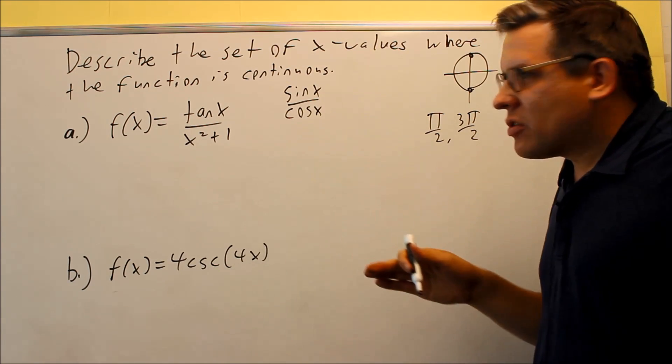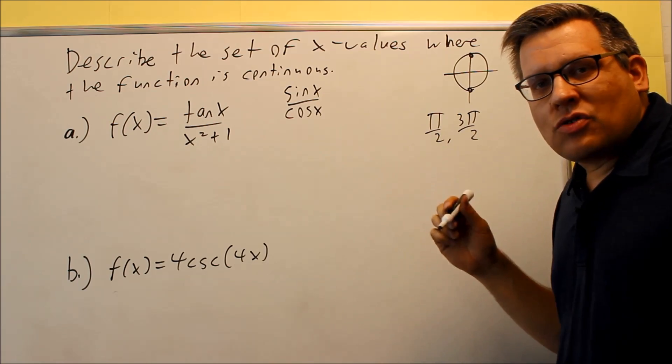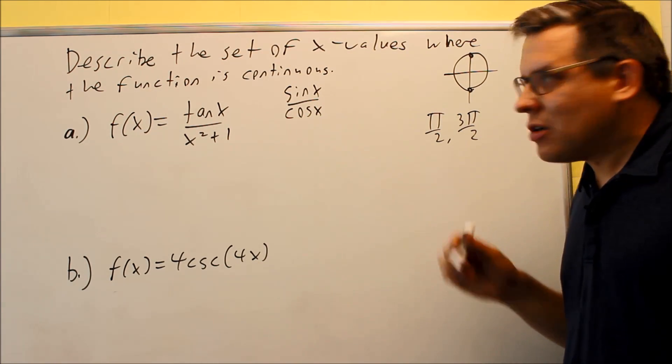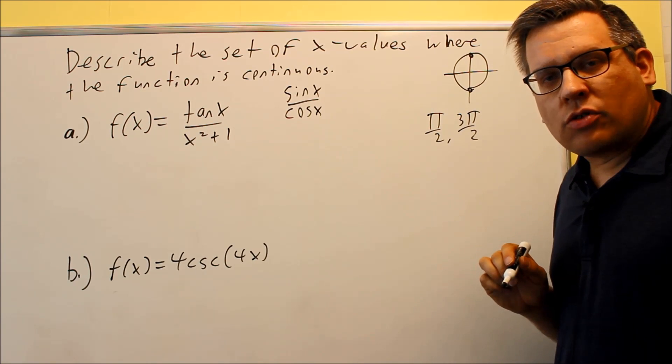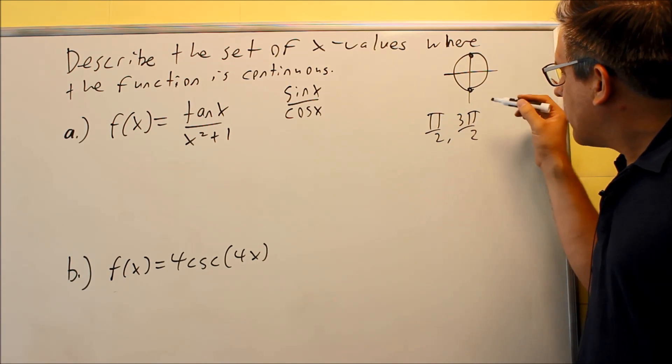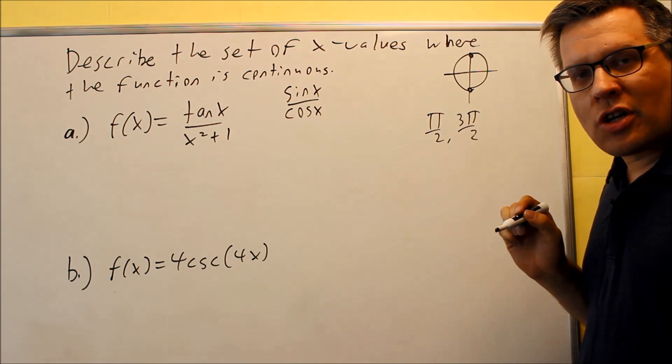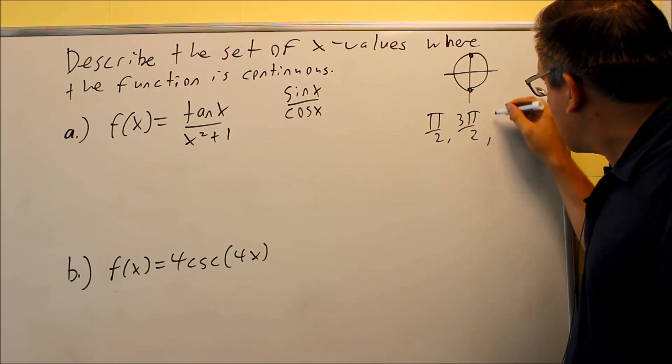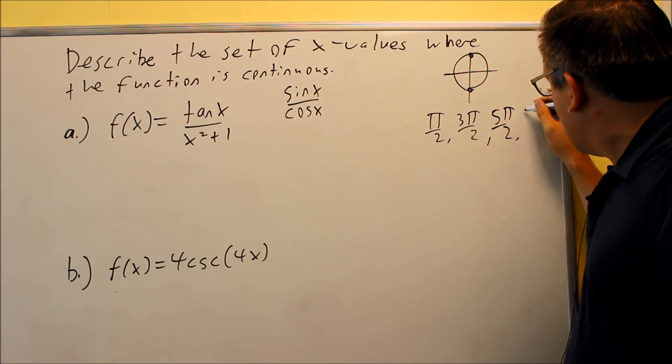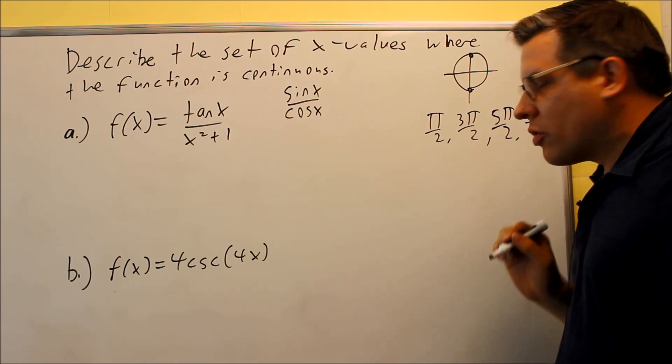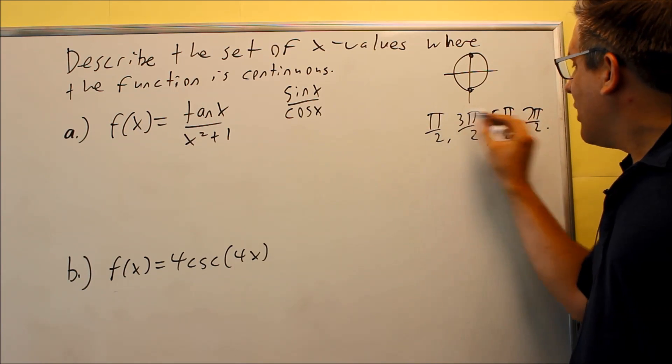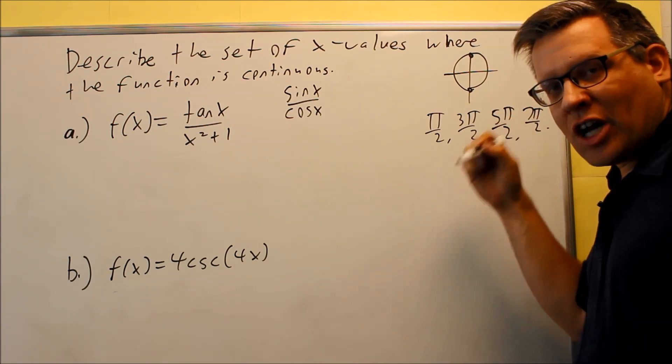However, these problems do not have us looking at only zero to two pi. These are talking about the general case. So I've got to consider every kind of revolution on here. So pi over two, three pi over two, that's places where it's going to be zero. But also, I can keep going around the circle more times if I want. So it's going to be five pi over two, seven pi over two, and so forth.